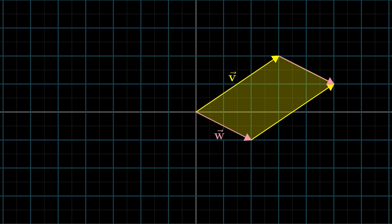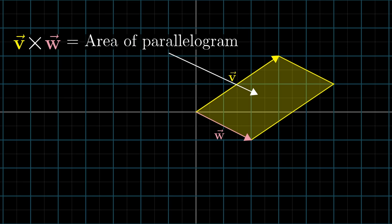The cross product of v and w, written with the x-shaped multiplication symbol, is the area of this parallelogram. Well, almost. We also need to consider orientation.